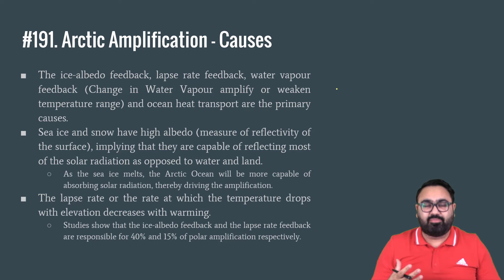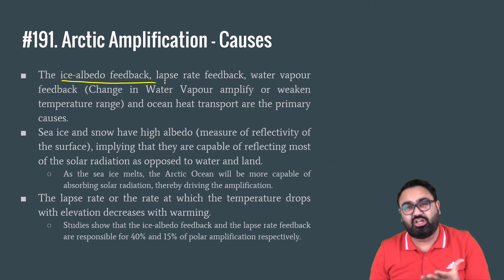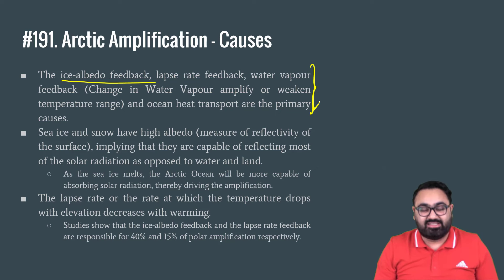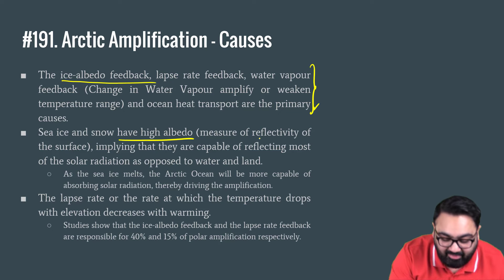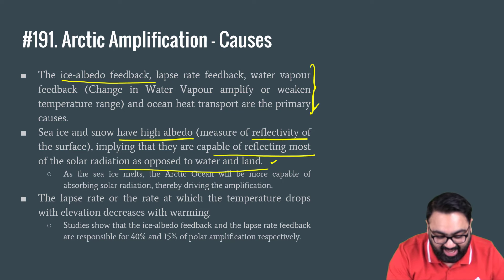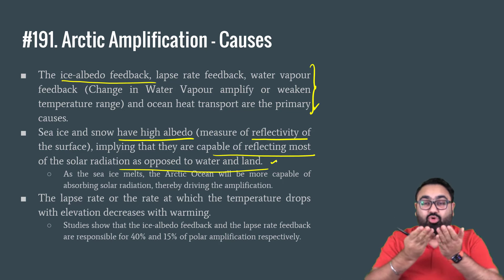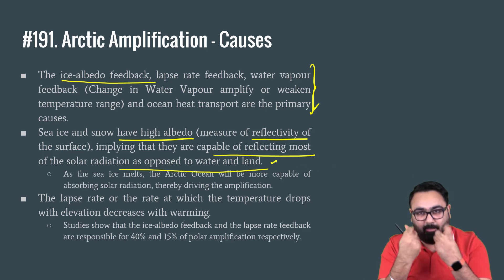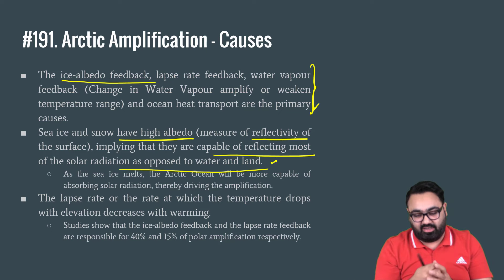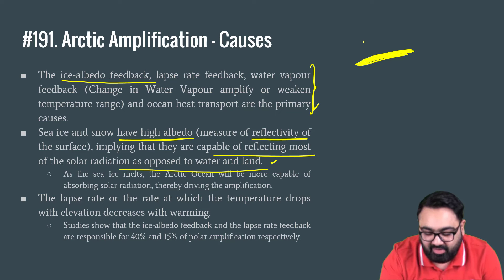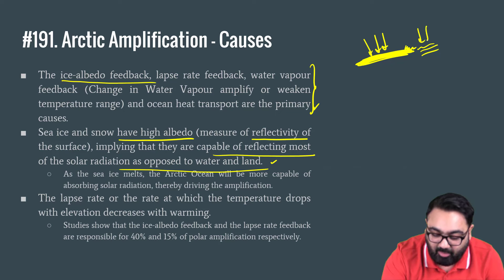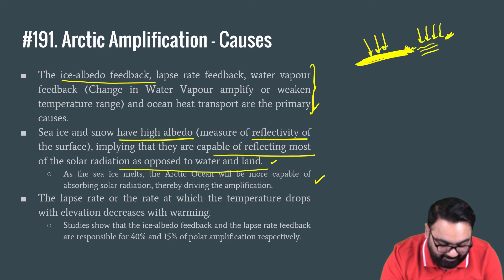The first main cause is ice albedo feedback — the reflection of sun rays that fall on ice, which is leading to much more sunlight being absorbed in this region. Ice and snow have much higher albedo, meaning they reflect much more solar radiation back compared to water and land. So as more and more ice melts and water comes in contact with solar radiation, it will absorb much more sunlight, thus increasing the heat generated in the Arctic. This is what is happening right now.